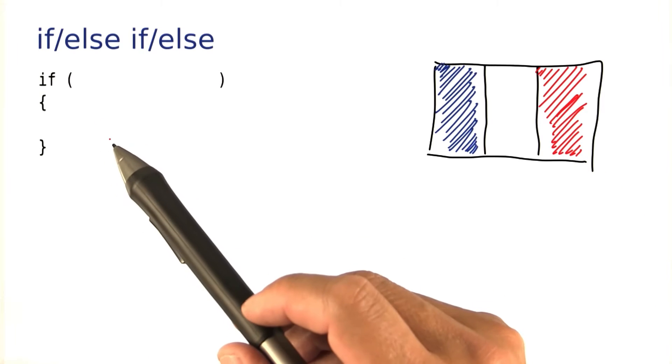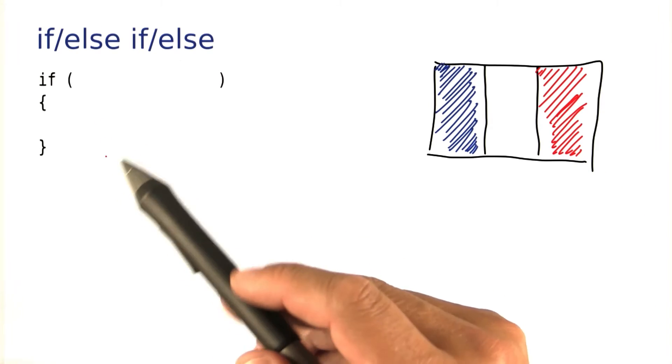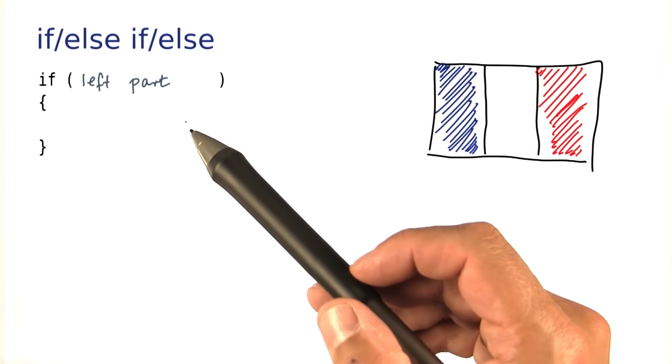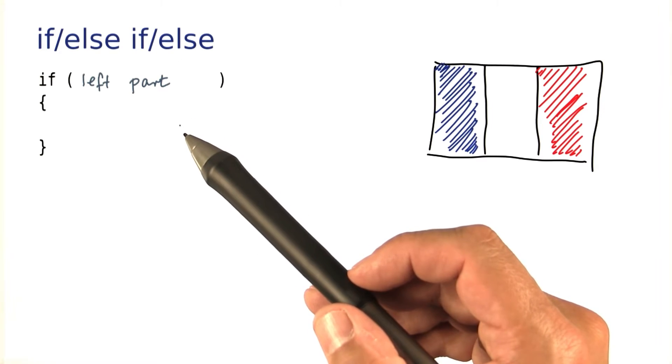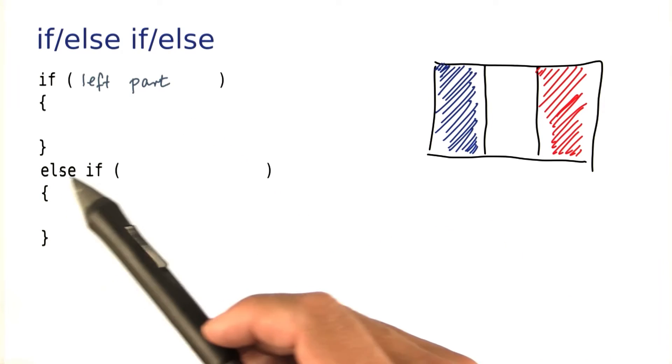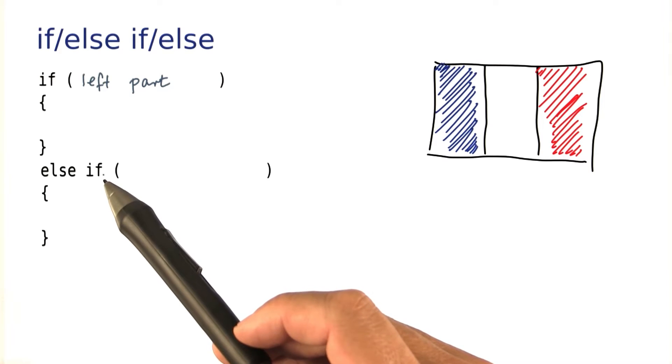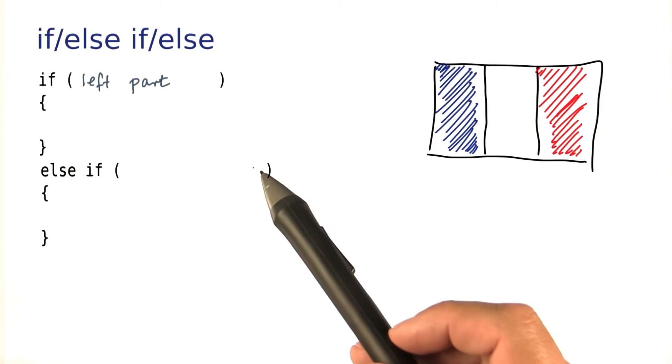In Java, you would start out with the first condition. And I'll leave it to you to fill in the details in the exercise. Then for the next part, you use an else if clause. So you simply write else if followed by another condition.